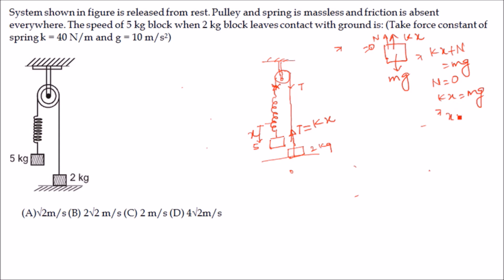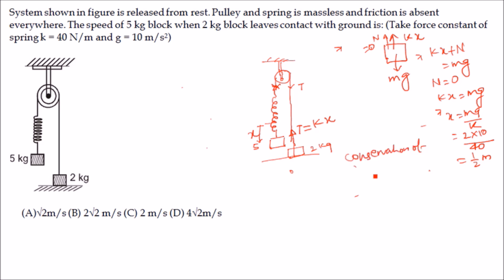From kx = mg we get x = mg/k. With m = 2 kg, g = 10 m/s², and k = 40 N/m, we get x = (2 × 10)/40 = 0.5 m. Now we apply conservation of mechanical energy for the 5 kg block.